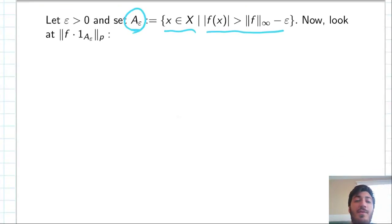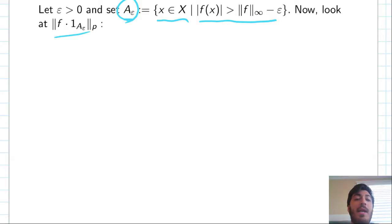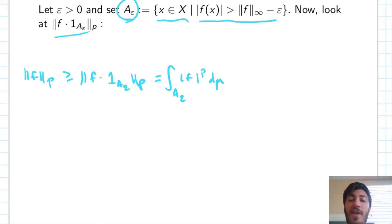And the hint I gave myself is, look at f times this indicator function, 1_{A_epsilon} to the p. So, in particular, we want to notice that the whole entire p norm is going to be larger than this restricted p norm where we're just looking at A_epsilon. So, let's write that out. What does that really mean? It means that we're restricting ourselves to the set A_epsilon. We're taking the pth power of f, and then we're taking the fractional power of that. But we know something about f on A_epsilon.